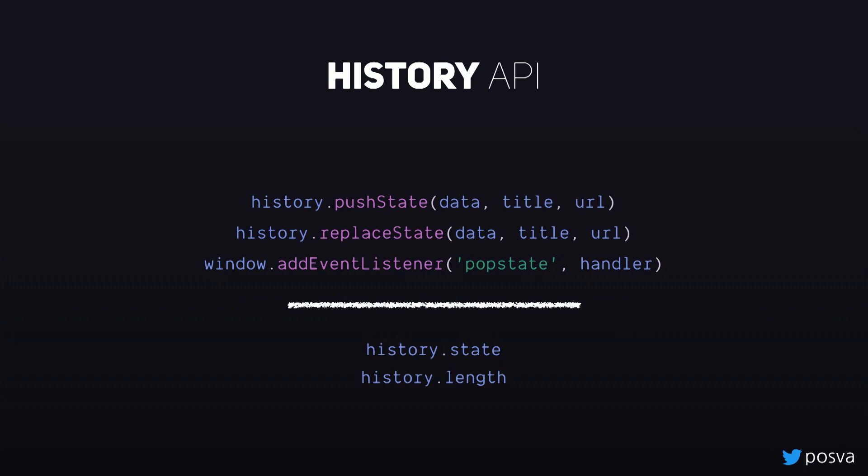We start off by talking about the core of the history module — that's the History API. I know we are barely getting started and it's already confusing. Naming things is not easy. So the main API we have here is what allows us to control the URL. We have these two functions with the exact same signature: pushState and replaceState.